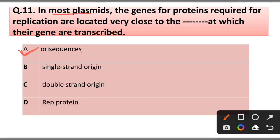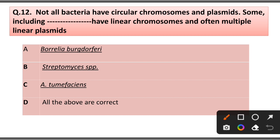Question number 12: Not all bacteria have circular chromosomes and plasmids. Some including these have linear chromosomes and often multiple linear plasmids: A) Borrelia burgdorferi, B) Streptomyces species, C) Agrobacterium tumefaciens. Answer is option D, all of the above.